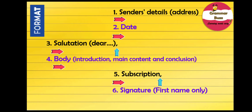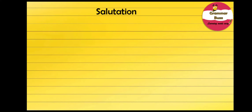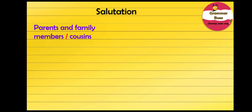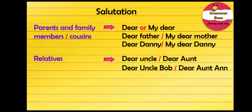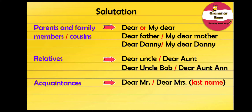Now let us look at a few salutations. The form of salutation will depend upon the relation in which you stand to the person to whom you are writing. For parents and family members, we usually use 'Dear' or 'My dear' — for example, 'Dear Father' or 'My dear Mother', 'Dear Danny' or 'My dear Danny'. For brothers, sisters, and cousins, we use 'Dear' or 'My dear' with the name of the person. For relatives, we use 'Dear Uncle', 'Dear Aunt', followed by their name, or simply 'Dear Uncle' or 'Dear Aunt'.